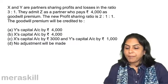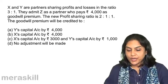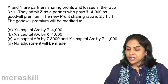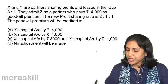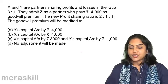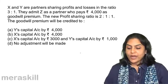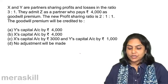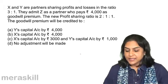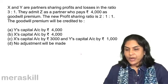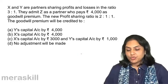Next question. X and Y are partners sharing profits and losses in the ratio 3:1. They admit Z as a partner who pays $4,000 as goodwill premium. The new profit sharing ratio is 2:1:1. The goodwill premium will be credited to: A. X's capital account by $4,000. B. X's capital account by $4,000. C. X's capital account by $3,000 and Y's capital account by $1,000. Or D. No adjustment will be made.